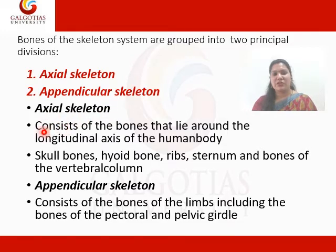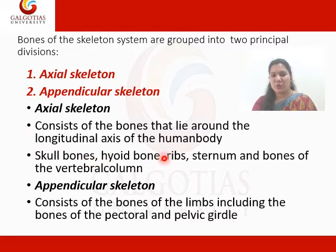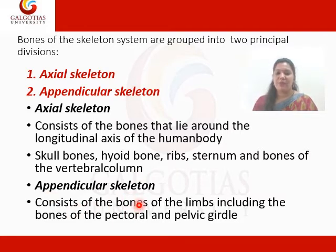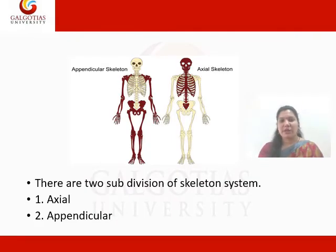Axial skeleton consists of bones that lie around the longitudinal axis of the human body — the bones of the skull, the hyoid bone, ribs, sternum and bones of the vertebral column; mainly those bones associated with the middle of the body. The appendicular structure consists of bones of the upper limb, lower limb, and the shoulder and pelvic girdle. The highlighted color in the diagram is the appendicular structure.